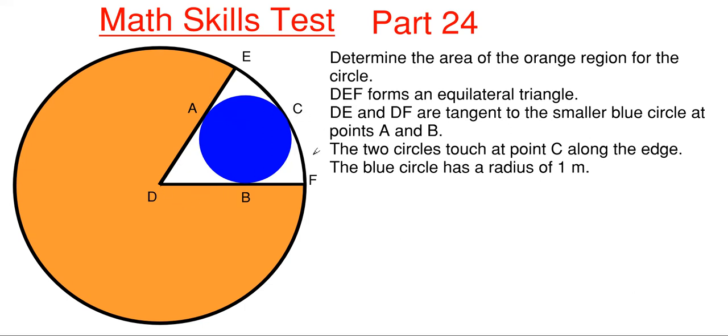We are told that D, E to F forms an equilateral triangle. D to E and D to F here are tangent to the smaller blue circle at points A and B. The two circles only touch at point C along the edge here, and the blue circle has a radius of one meter.